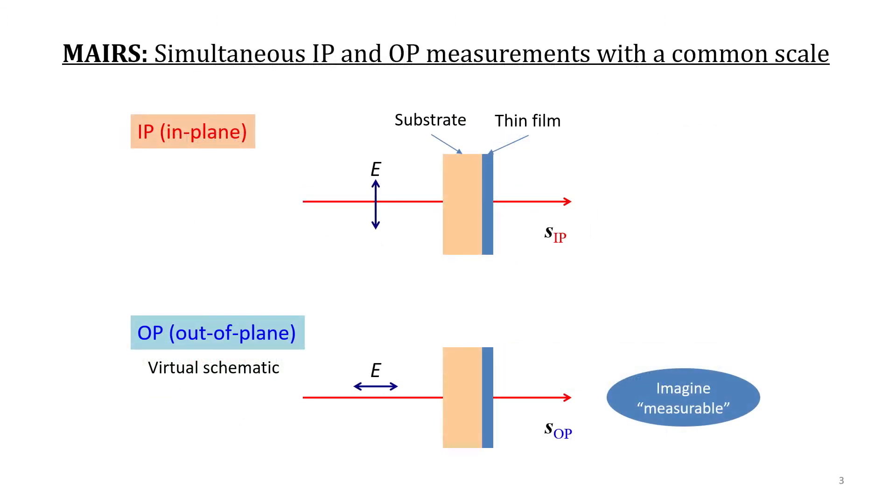This matter is overcome by using MAIRS. To make the ordinate scales of the IP and OP spectra common, both spectra are measured by the same optical configurations and no metallic surface is needed even for the OP measurement.